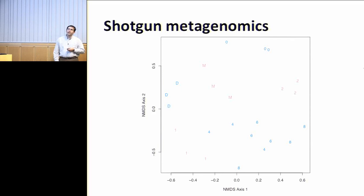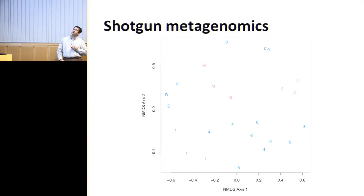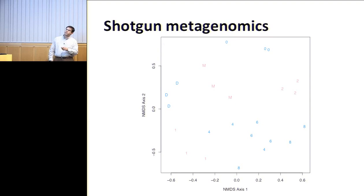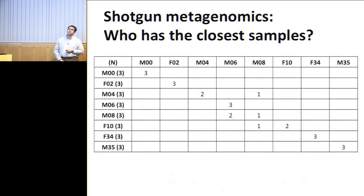We've obtained three shotgun metagenomic libraries from each of the family members — from the beginning, middle, and end of the month for all eight individuals. Coded pink for females and blue for males, D is dad and M is mom, the number reflects their age. Basically you see dad, mom, infant, two-year-old, and the boys cluster together. Perhaps the ten-year-old girl is beginning to cluster away. Each individual has a gut community most like their own on these three time points, except for the weaned children where we see overlap between community structures, like we saw with the 16S data.